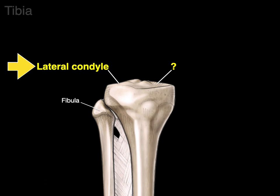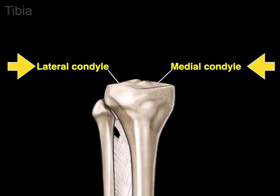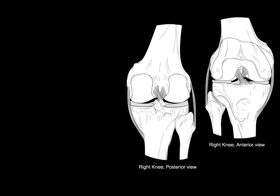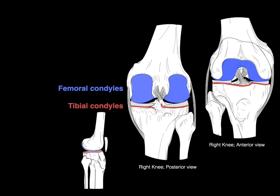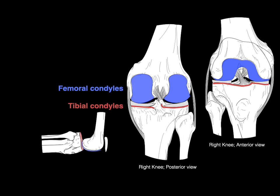The fibula is on the lateral side, making that the lateral condyle, which then makes the other one the medial condyle. These two tibial condyles articulate with the femoral condyles and together they make the synovial bicondylar hinge joint of the knee.